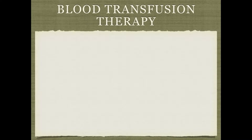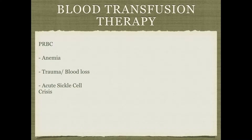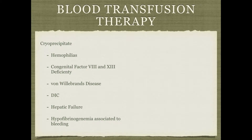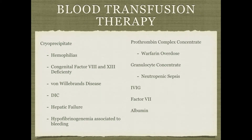When we say blood transfusion, what are we talking about? Packed blood cells — you give for anemia, trauma, blood loss. FFPs, platelets, cryo, prothrombin complex concentrates — that's K-central — IVIG, albumin. Basically, when you consent your patients for any type of blood transfusion, you have to talk about all the risks. Even transfusing something like albumin counts as a blood transfusion, so all of them need consent.